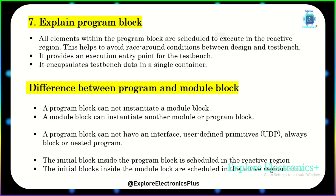Explain the program block and the difference between program and module block. All elements within the program block are scheduled to execute in the reactive region, which helps avoid race conditions between the design and the testbench. It provides an execution entry point to the testbench and encapsulates testbench data in a single container. A program block cannot instantiate a module block, but a module block can instantiate another module or program block. A program block cannot have any interface, user-defined primitives, always block, or nested program. The initial block inside the program block executes in the reactive region, while the initial block inside a module executes in the active region.